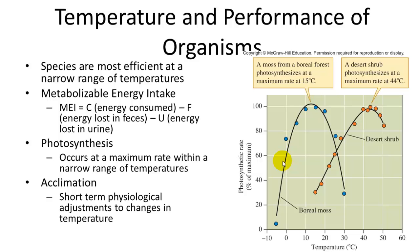Photosynthesis also affects the temperature and performance of organisms, and it occurs best at a maximum rate within a narrow range of temperatures. This figure shows two different organisms — desert shrub and arboreal moss. Arboreal moss is in the boreal forest and does better at a lower temperature. In the desert, which has higher temperatures, the maximum rate of photosynthesis was at 44 degrees Celsius. There is some fluctuation in temperate areas, so organisms will acclimate, making physiological adjustments in the short term to adjust that efficiency.